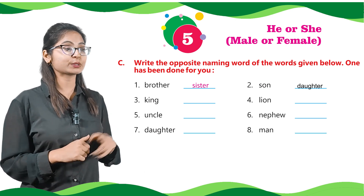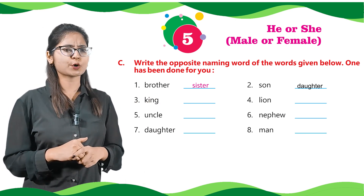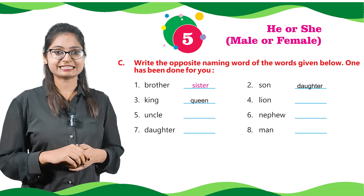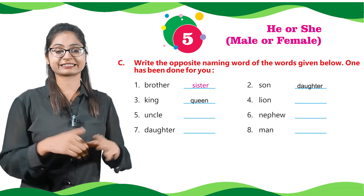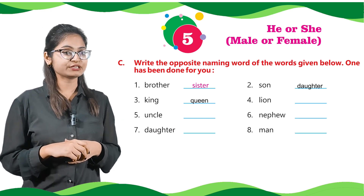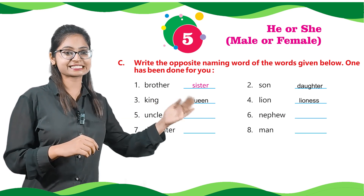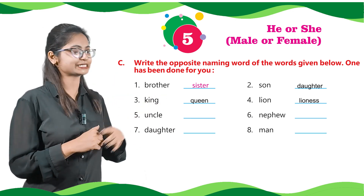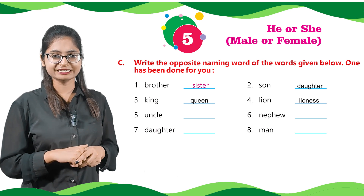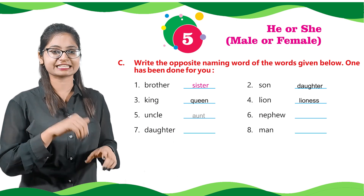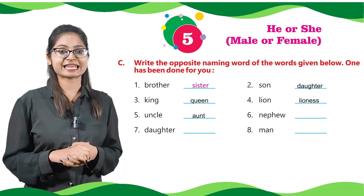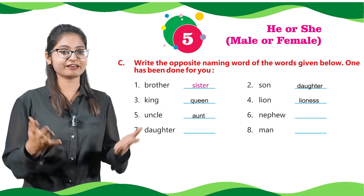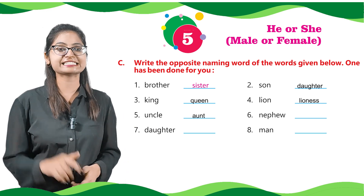Number three, we have given king — the opposite of king is queen. Next, we have lion — for lion, we will write lioness. On number five, we have given uncle — the opposite naming word for uncle is aunt. Next, we have given nephew — the opposite is niece.